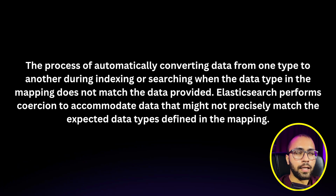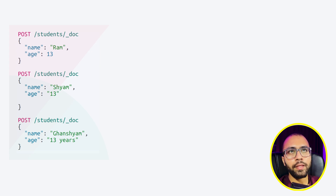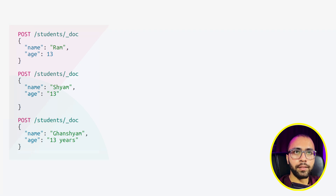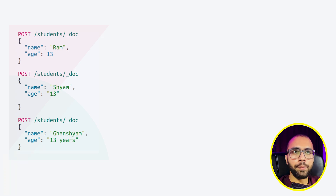I have written three queries here. Students are being added to the index. The first student is Ram, 23 years. Then we have added another student — this one is 13 years, but it is written as a string. So what will happen? And the third one also has 13 years. We will study all this in the video.